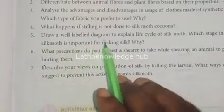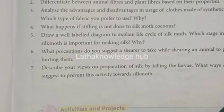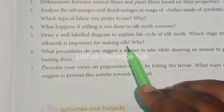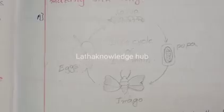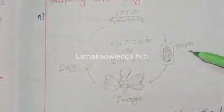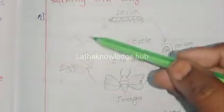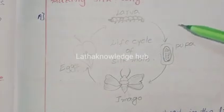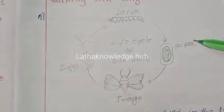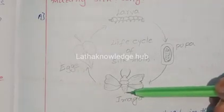Draw a well-labeled diagram to explain the life cycle of silk moth. Which stage in the life of silk moth is important for making silk? The life cycle of silk moth involves four stages: eggs, larva, pupa, and imago.